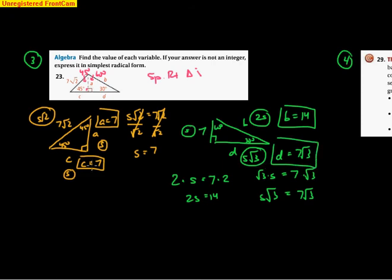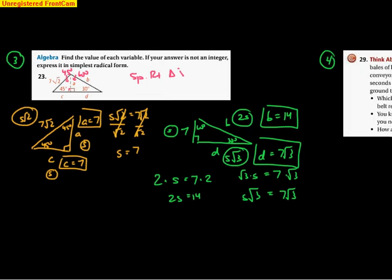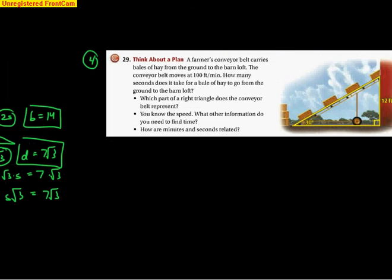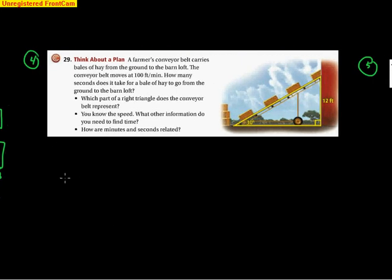So the four variable values are a = 7, c = 7, b = 14, and d = 7√3. For a complicated problem like this, just break it down, breathe, and you can do it.